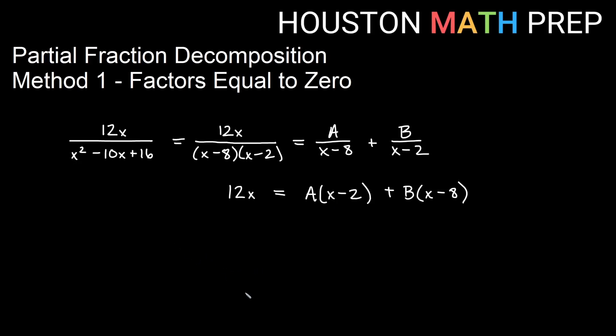And now letting factors equal 0 is what we really want to do for this method. So if I look at this first factor, I have x minus 2, and to make that equal 0, I will let x equal positive 2. So we'll go ahead and plug that in. That will give us 12 times 2 equals a times 2 minus 2, which will be 0, plus b times 2 minus 8, which would be negative 6. So here we'll get 24 on the left side, and we'll get negative 6b, and that will tell us there, once we divide by negative 6, that b is negative 4.